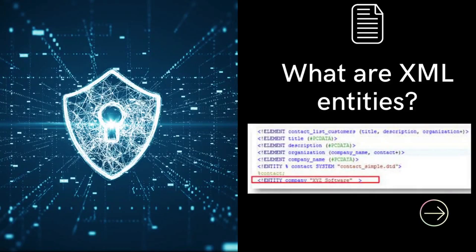Let's talk about what XML entities are. XML entities are a way of representing an item of data within an XML document instead of using the data itself. Various entities are built into the specification of the XML language. For example, the entities &lt; and &gt; represent the characters less than and greater than. These are the meta characters used to denote XML tags, and so they generally need to be represented using entities when they appear within the data.